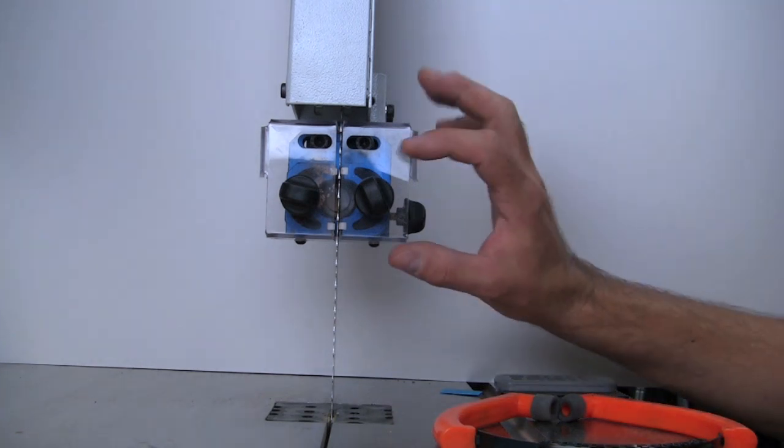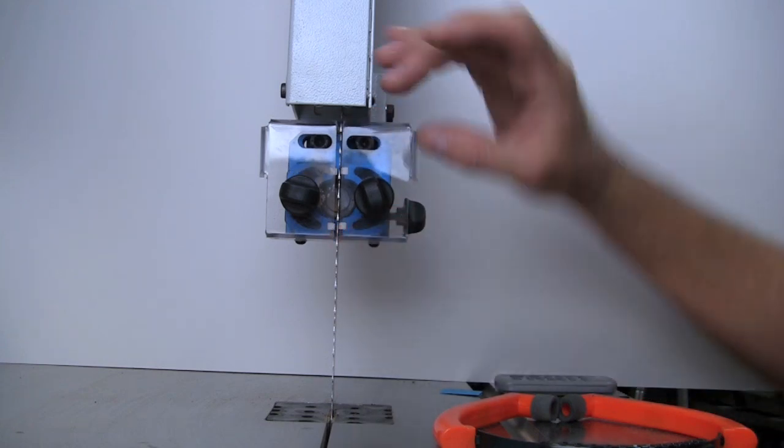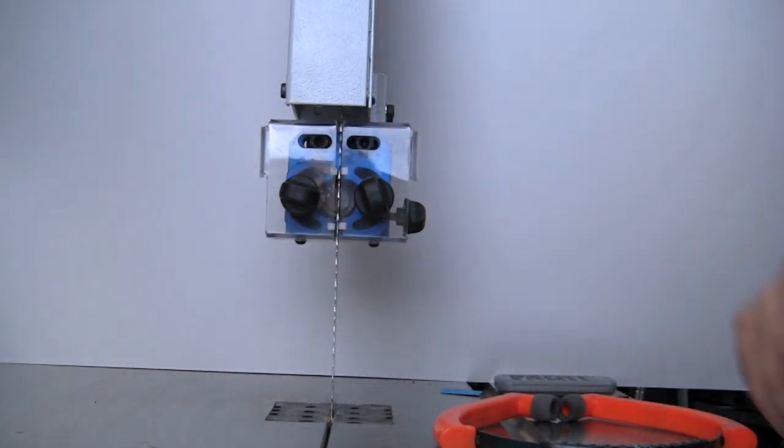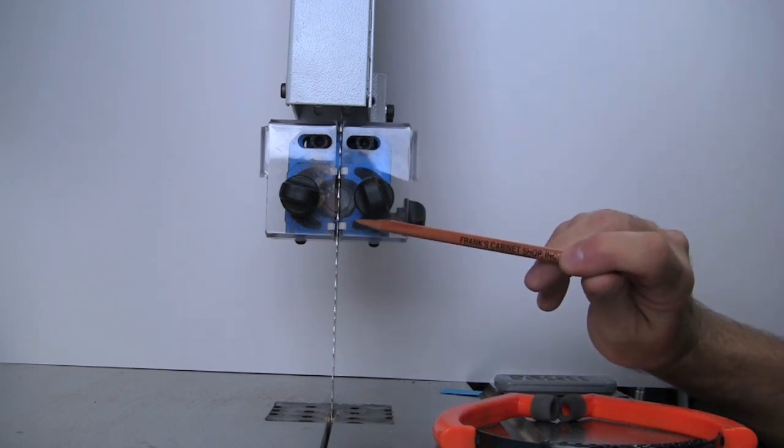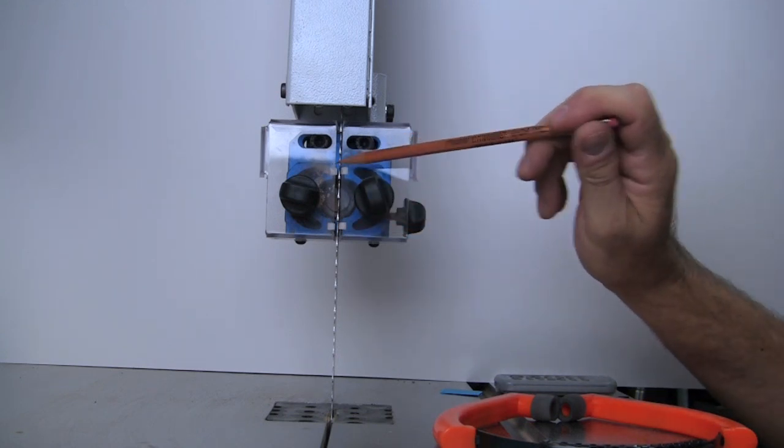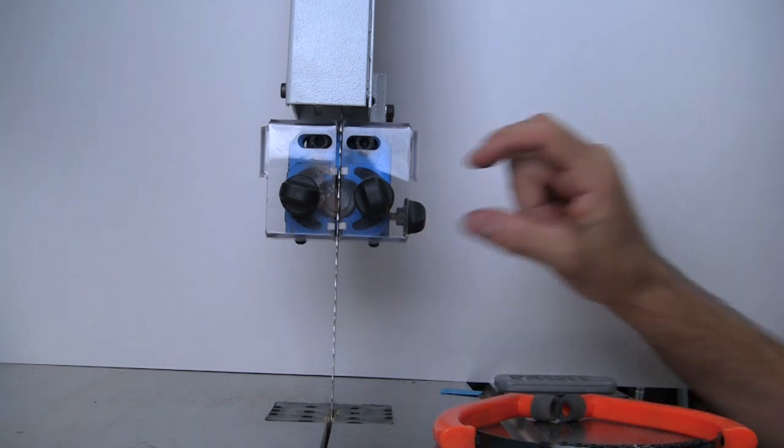So the guides themselves are shaped kind of like little Cs. There's a C here and a C there. And what you see at the top is you see some white ceramic rods at the top. They're flat plates that are mounted inside the guides. Those are consumables.